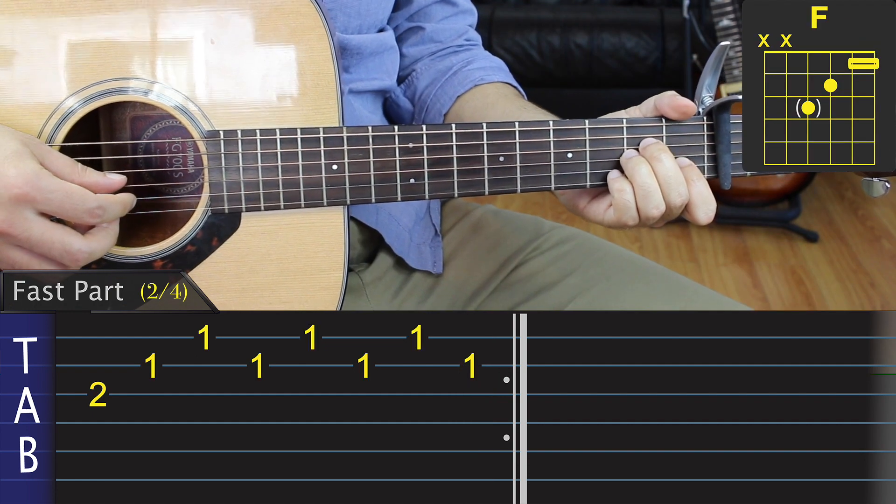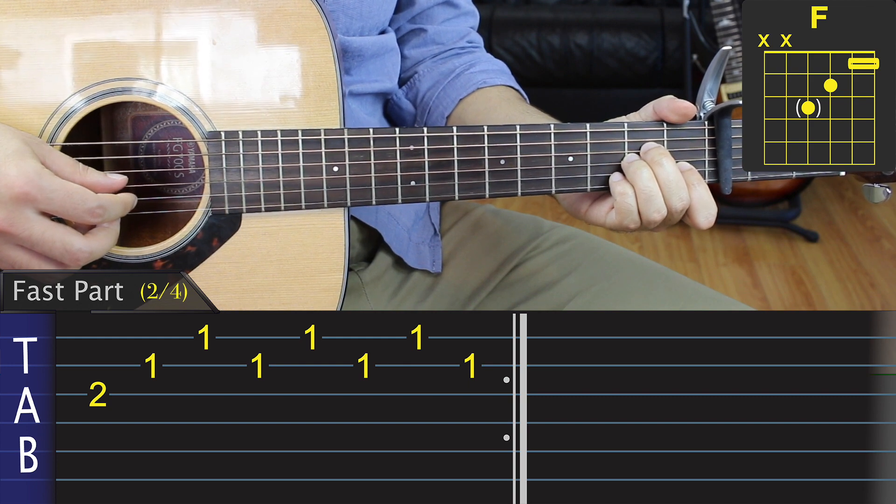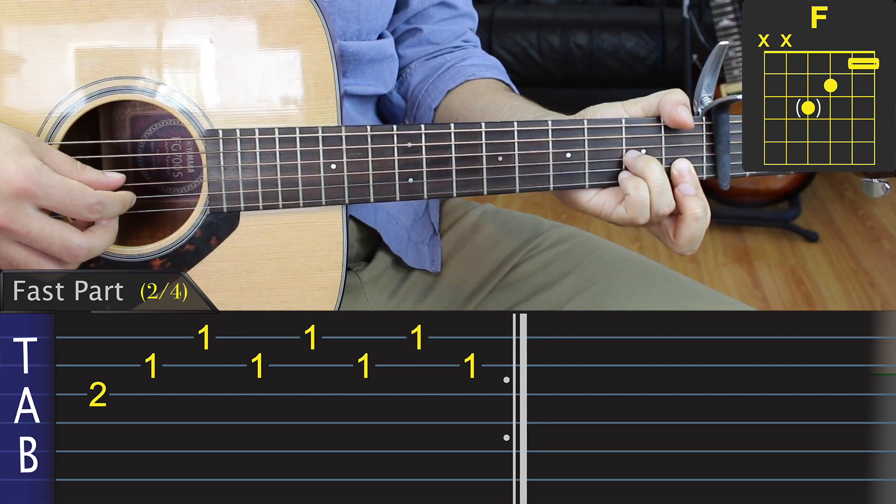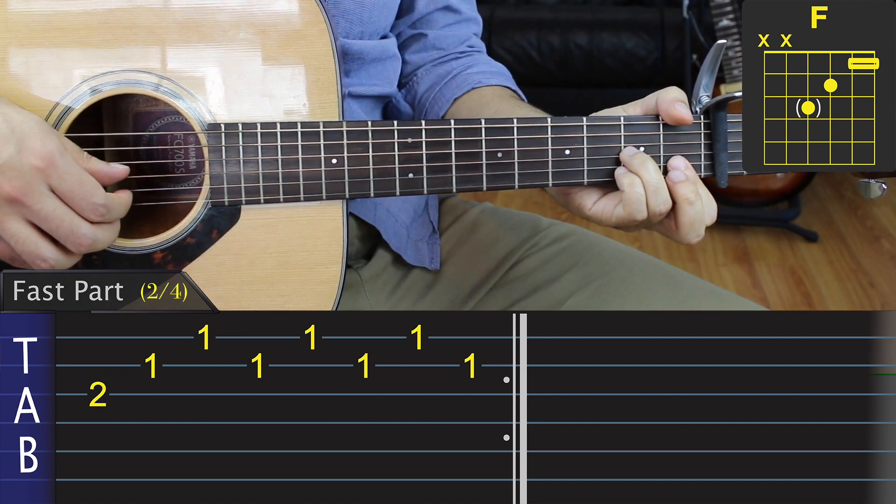After that, we form an F chord with our left hand and apply the same picking pattern. What I like to do is actually take off my middle finger and make a mini bar of the two thinnest strings with my index, and leave my ring finger in place. Alright, let's give it a try.